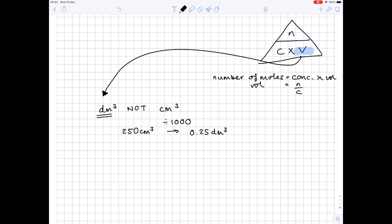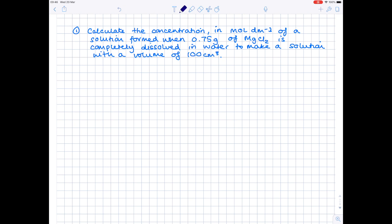However, now we're going to have a look at some practice questions. So in this first example, calculate the concentration in mol dm⁻³ of a solution formed when 0.75 grams of magnesium chloride is completely dissolved in water to make a solution with a volume of 100 centimetres cubed.